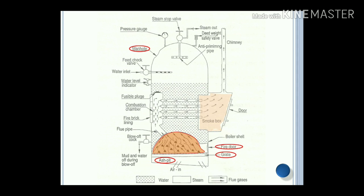Manhole: for inspection and cleaning purposes, a man enters into the boiler. Mud and water are drained during blow-off — if maintenance requires draining out all the water, this is done with the help of the blow-off cock. Anti-priming pipes: these help to separate out the water particles or moisture from the steam or vapour, so only pure dry steam passes out from the steam stop valve to the application.